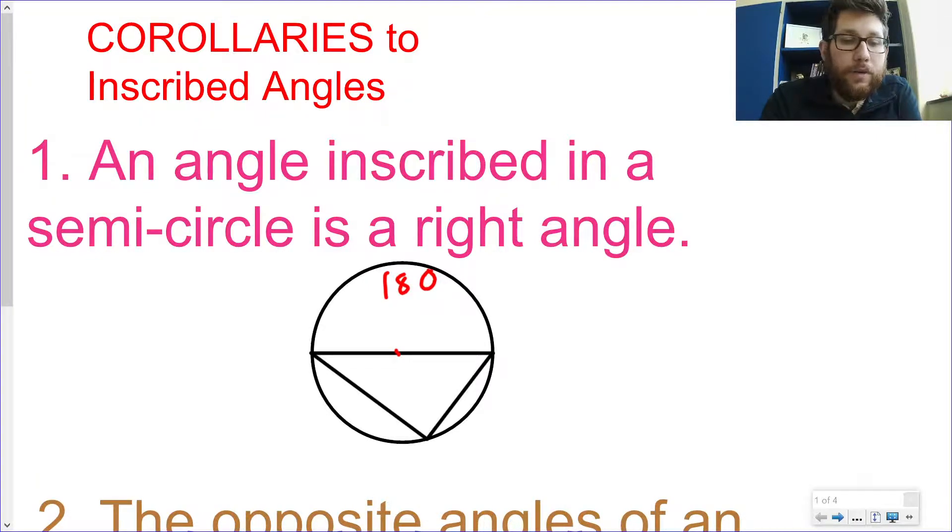Well, what's half of 180? It's just 90. So anytime we have an inscribed angle that's 180 degrees, it's going to be 90 degrees. Or what ends up happening is that inscribed angle will always have endpoints on the diameter of the circle. So that hopefully is pretty obvious.